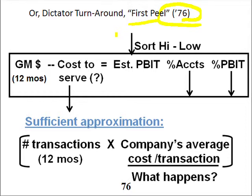It was an asset play. He immediately sold the real estate and did some things like that on that basis, but the operating companies were still losing money.